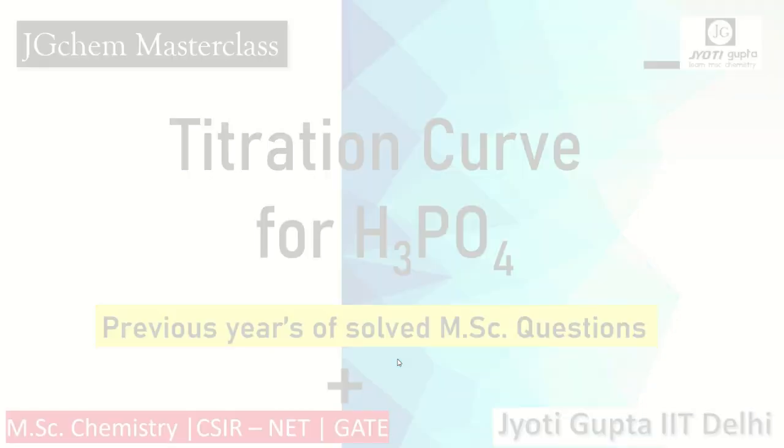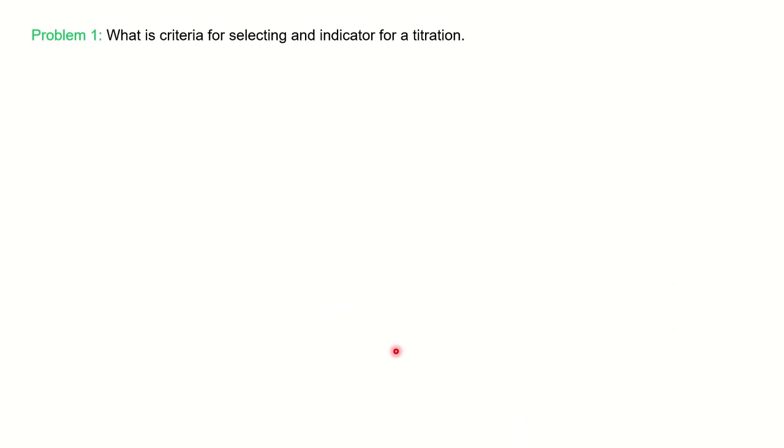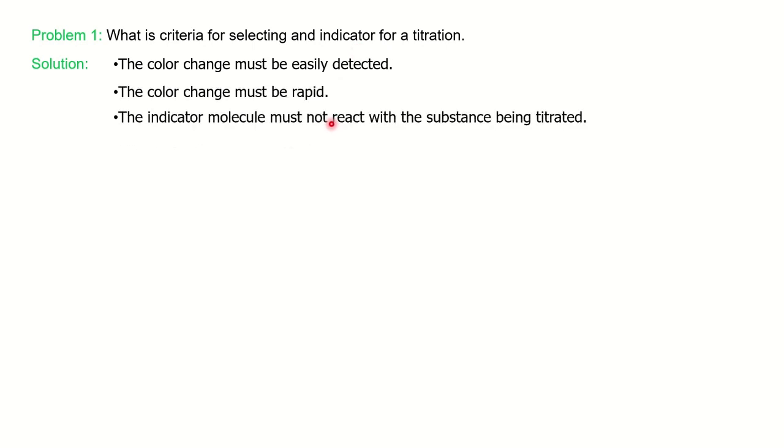Now we will solve some questions. First is: what is the criteria for selecting an indicator for the titration? So the first point is there should be a change in the color at the equivalence point. The indicator should have different color in acid and base, and the reaction should be very fast and it should not react with the analyte. These are the criterias for selecting an indicator.